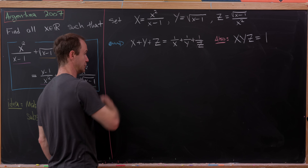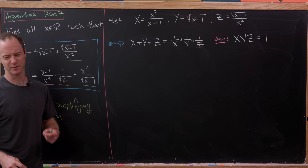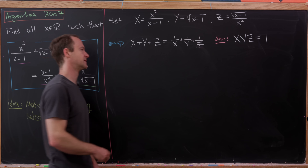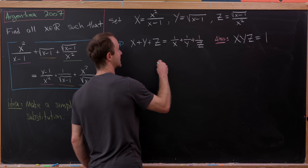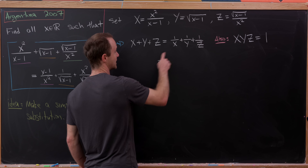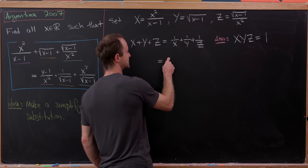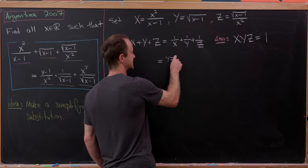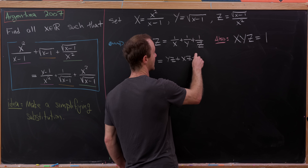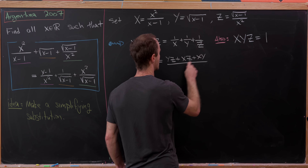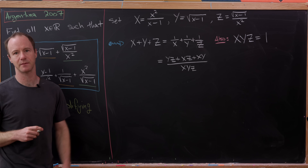Let capital X equal the first term: x squared over (x minus 1). Let capital Y equal the square root of (x minus 1). And let capital Z equal the square root of (x minus 1) over x squared.